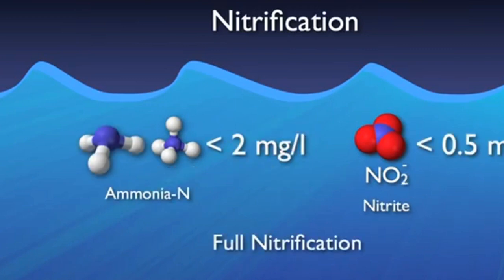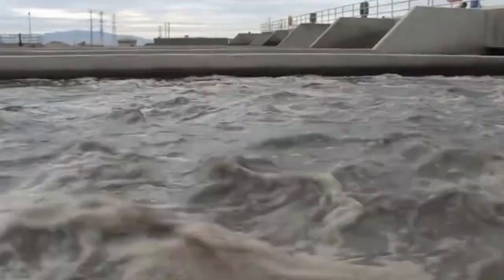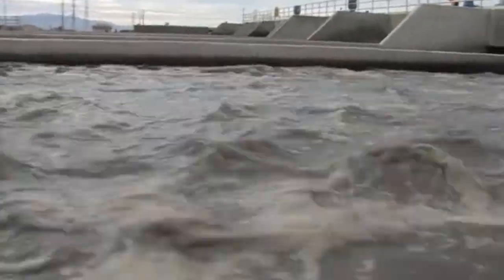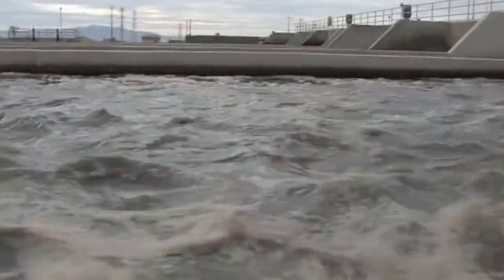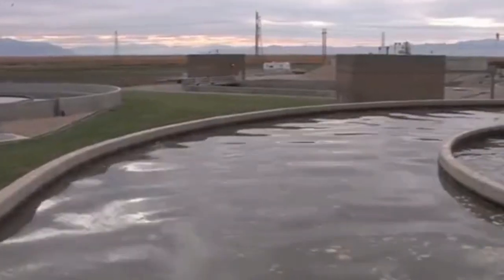Typically, full nitrification is observed when ammonia concentrations are reduced to less than 2 mg/L and nitrite concentrations to less than 0.5 mg/L. As mentioned, nitrification is a very oxygen-hungry process. As a comparison, in order to remove 1 pound of BOD, 1.2 pounds of oxygen are required. However, to reduce 1 pound of ammonia to nitrate, 4.6 pounds of oxygen are required.